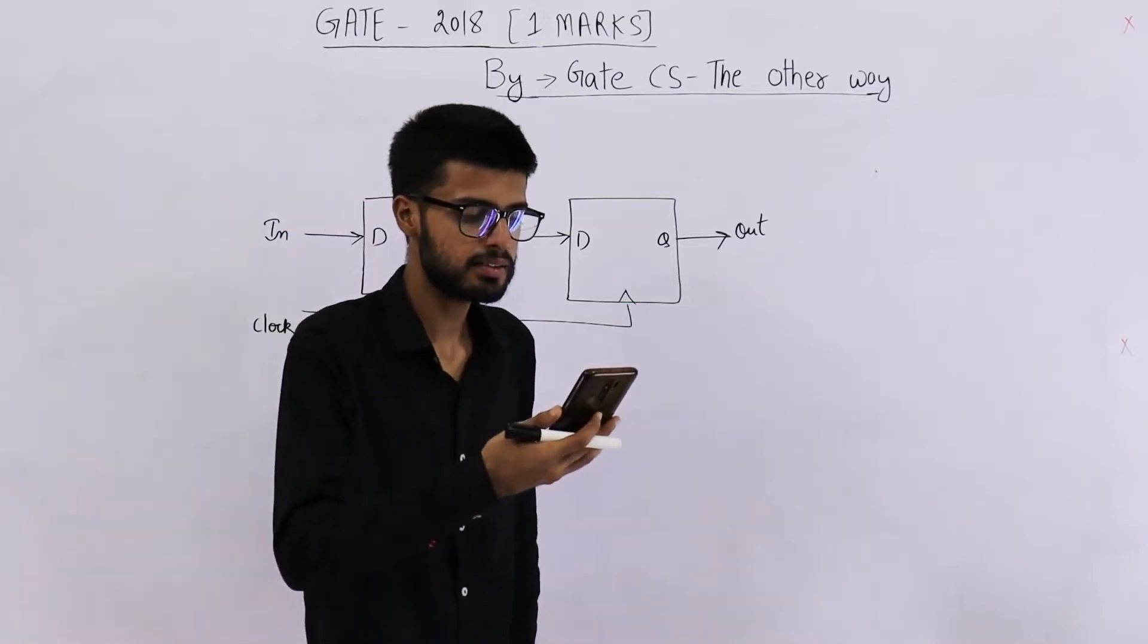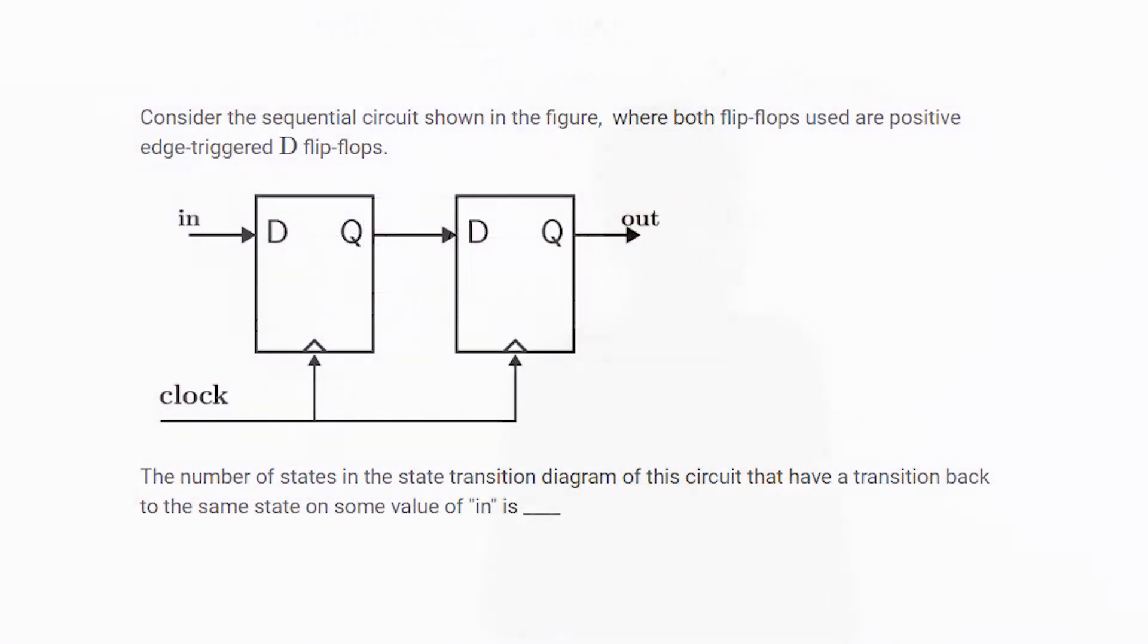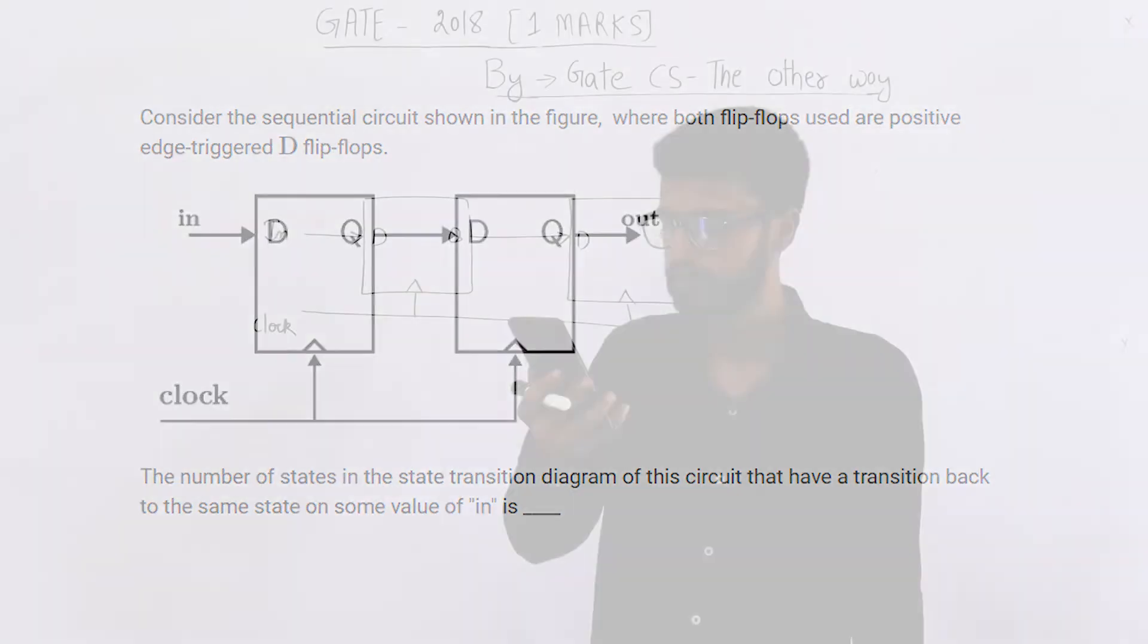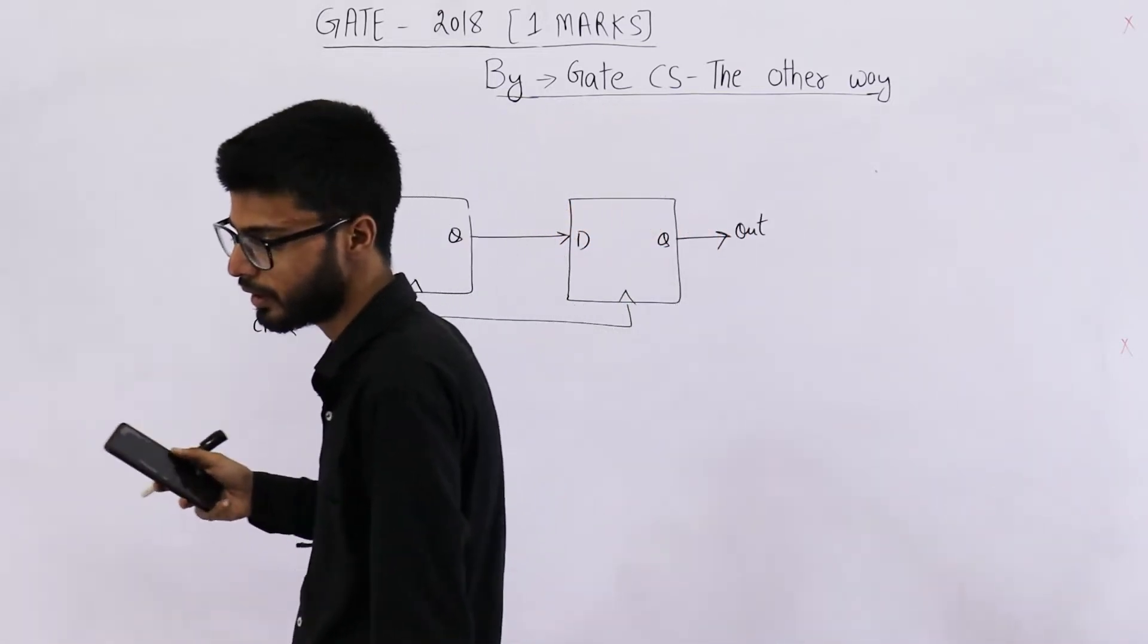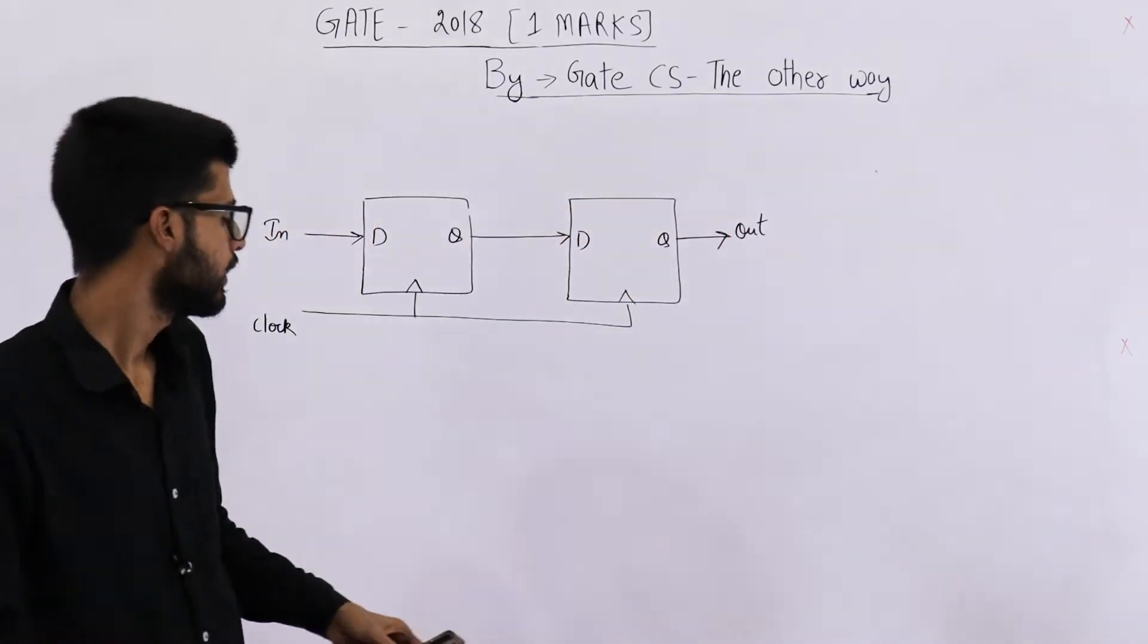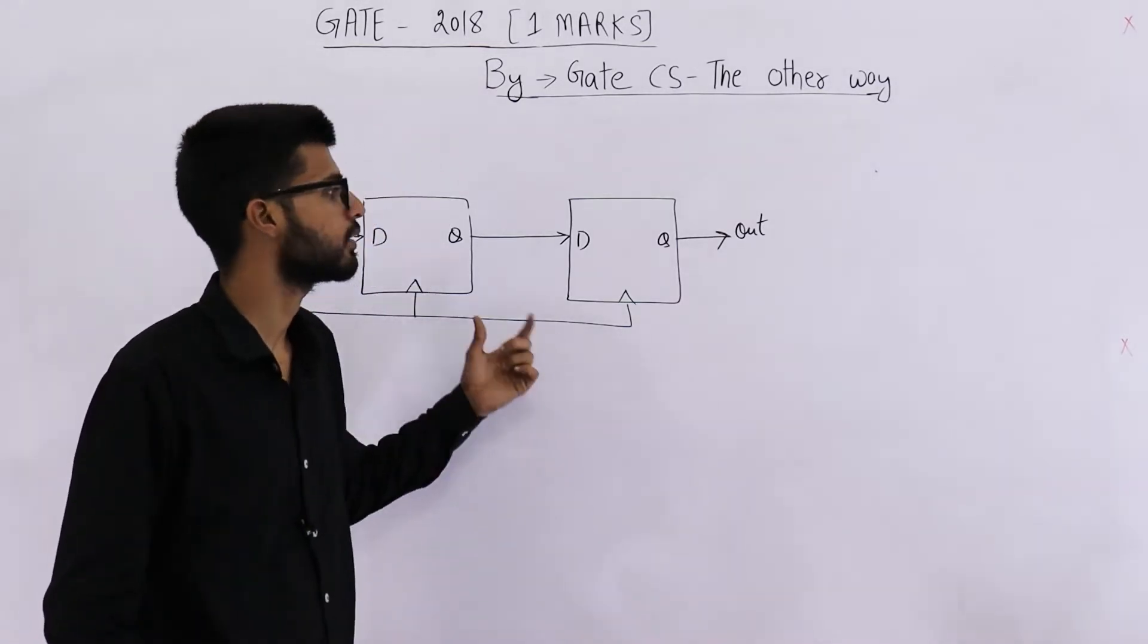It says, consider the sequential circuit shown in the figure, where both flip-flops used are positive edge-triggered D flip-flops. The number of states in the state transition diagram of this circuit that have a transition back to the same state on some value of in is. We need to find out how many states have a self-loop in state transition diagram for this circuit.